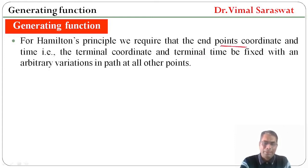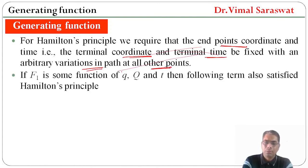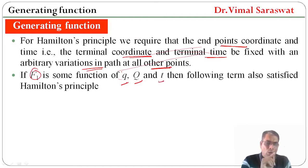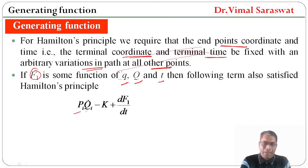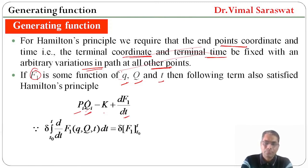For generating function and Hamilton's principle, we require that the endpoint coordinate and time — that is terminal coordinate and terminal time — be fixed with an arbitrary variation in path at all other points. If F1 is some function of old coordinate, new coordinate, and time, then the following term also satisfies Hamilton's principle: sigma_i (P_i Q_i_dot minus K) plus dF1/dt.